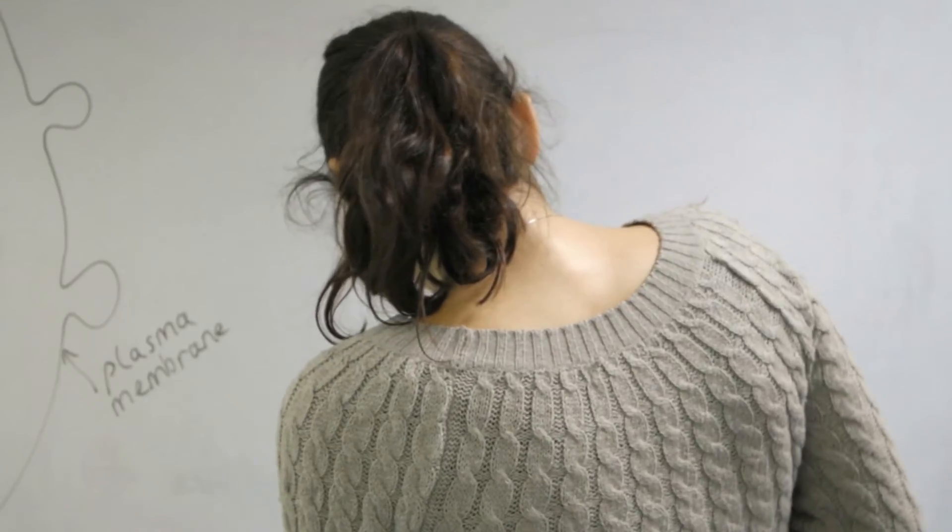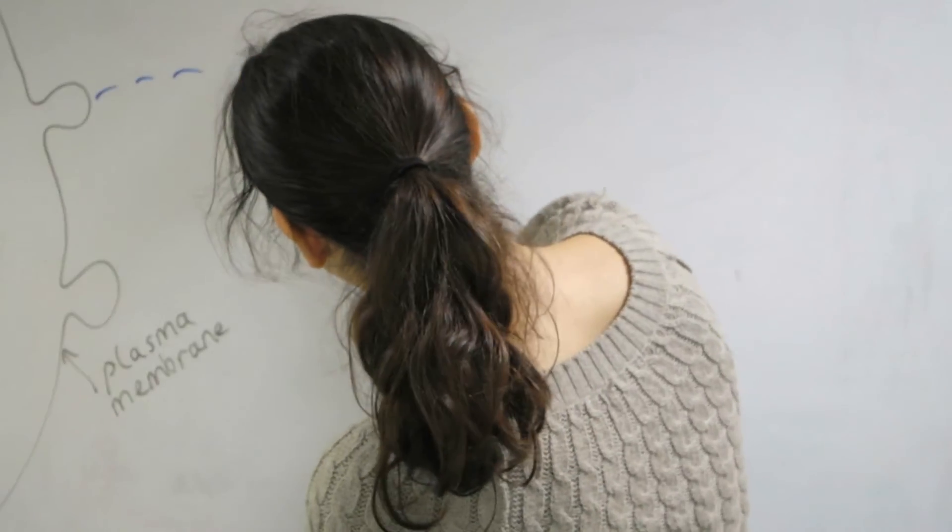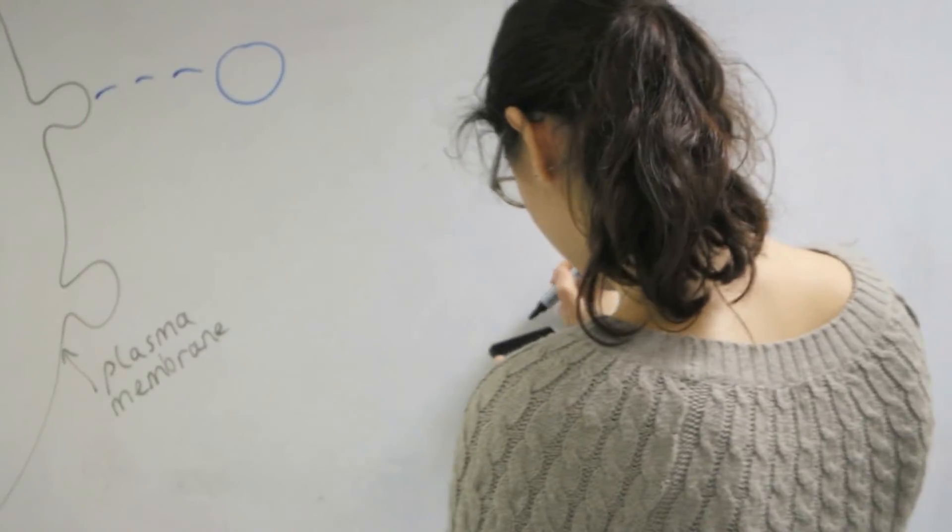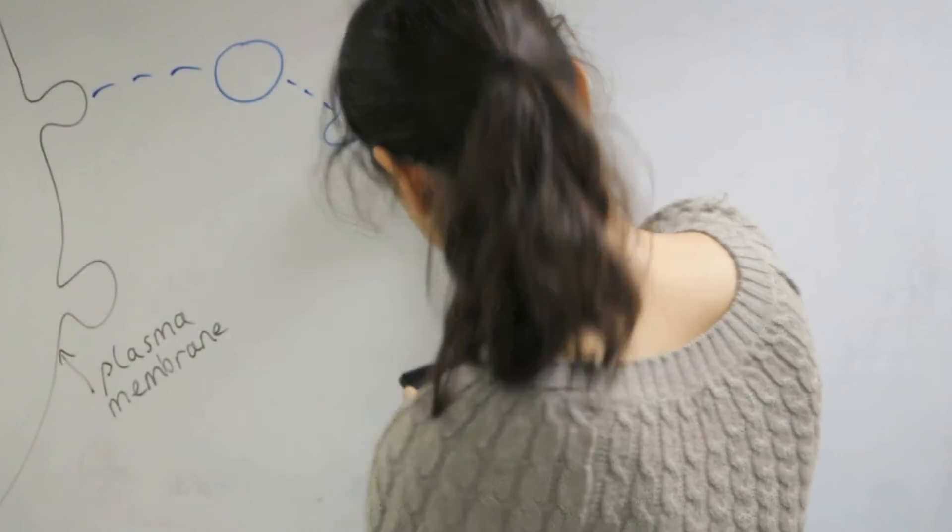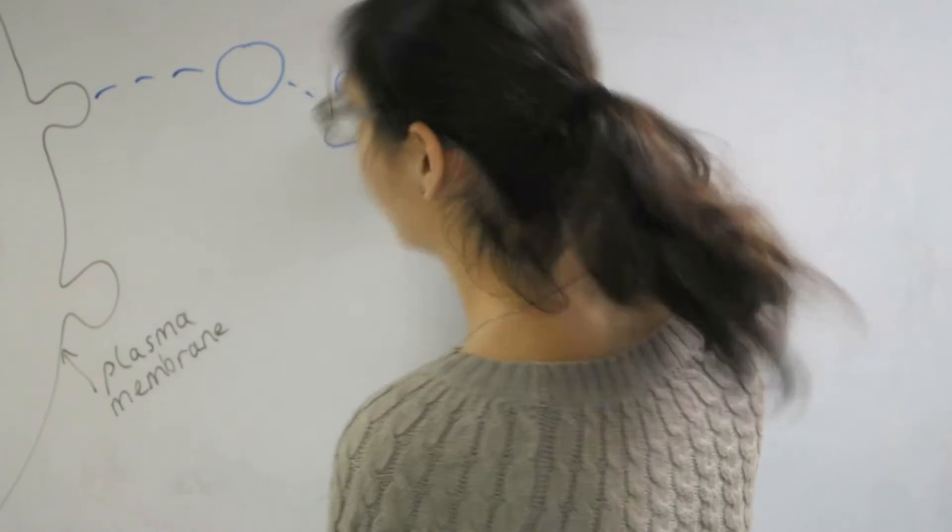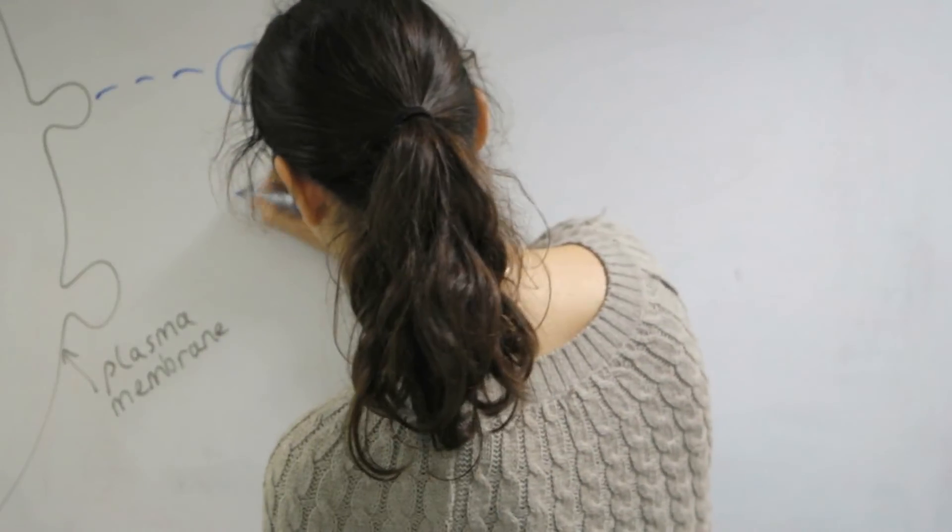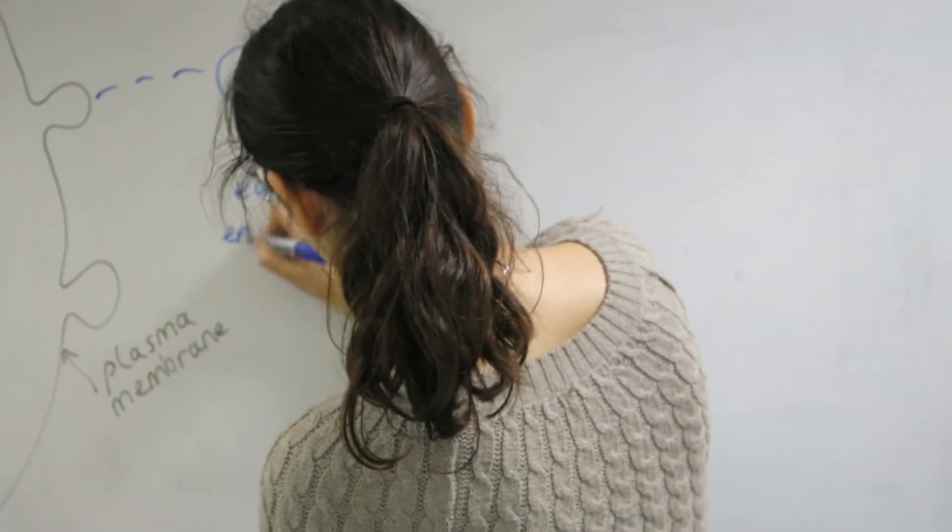These extracellular molecules may be for example membrane proteins which are part of a signal transduction cascade and must be internalized within the cell in order to terminate the signal transduction cascade. They're internalized in endocytic vesicles.